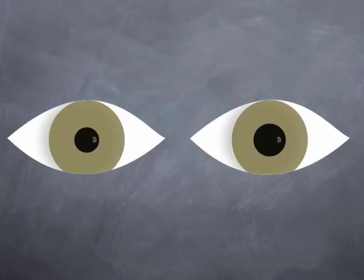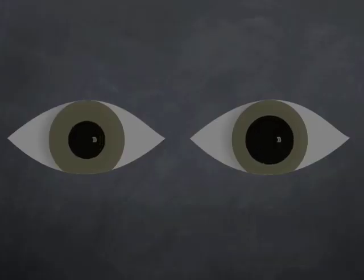Finally is pupil asymmetry up to 2mm that doesn't change in light or dark. Both pupils change size but the relative difference remains the same. This is present in up to 20% of normal people and termed physiological anisocoria. Both eyes respond normally to light.